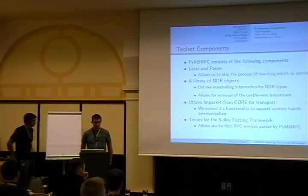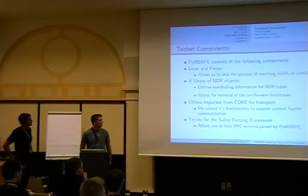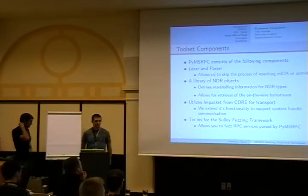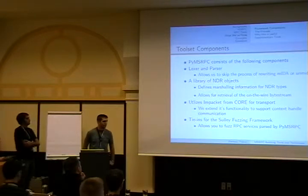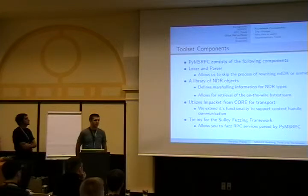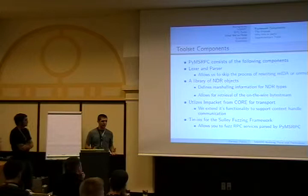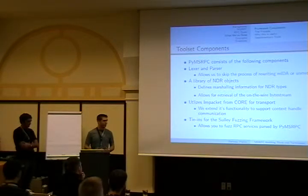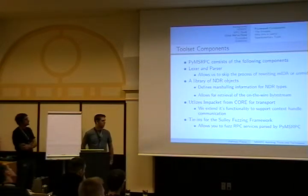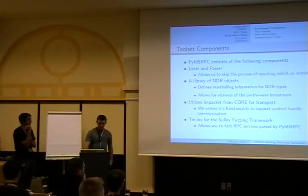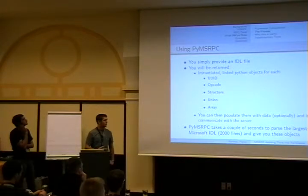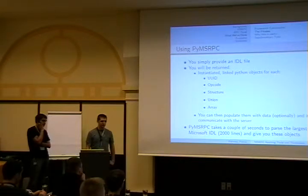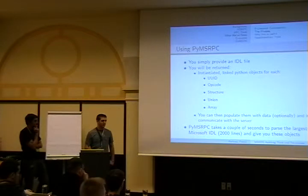You can print out the byte stream and do all sorts of things. We use Impacket from Core to actually transport the marshalled data across the wire. We extended its functionality to support context handles — the reason you can't audit a lot of Microsoft-specific RPC services is that people haven't been able to handle context handle communication, whereby you query one opcode, get a specific handle back, and need that handle to query another opcode. We also have tie-ins for the Sulley Fuzzing Framework to fuzz any services you discover. Using our toolset, you provide an IDL file, and you get a Python list of UUIDs. For each UUID you can step through all the opcodes; for every opcode you can step through elements — structures, unions, arrays, or base types like long or short — and pack and transport any of that over the wire.